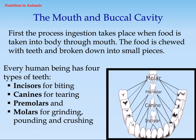The mouth and buccal cavity: first, the process of ingestion takes place when food is taken into the body through the mouth. The food is chewed with teeth and broken down into small pieces. Every human being has four types of teeth.